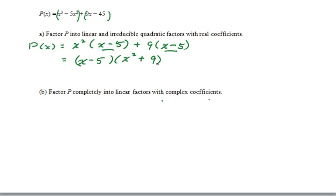And this is as far as we can go because as we saw in the previous example, x squared plus 9 can be factored but it would be x minus 3i and x plus 3i and those are not real numbers.